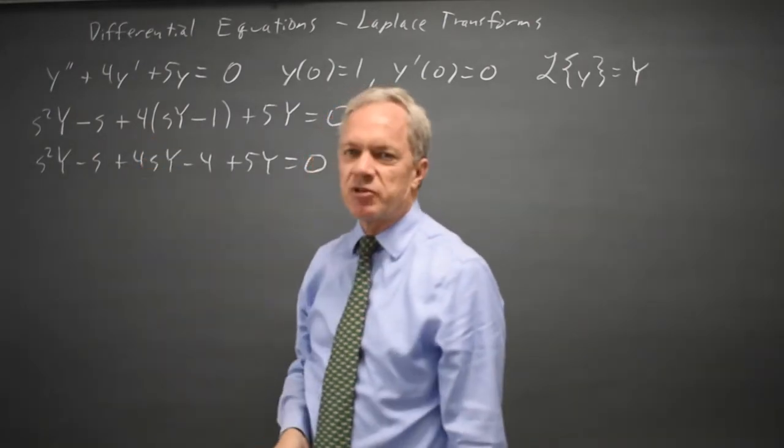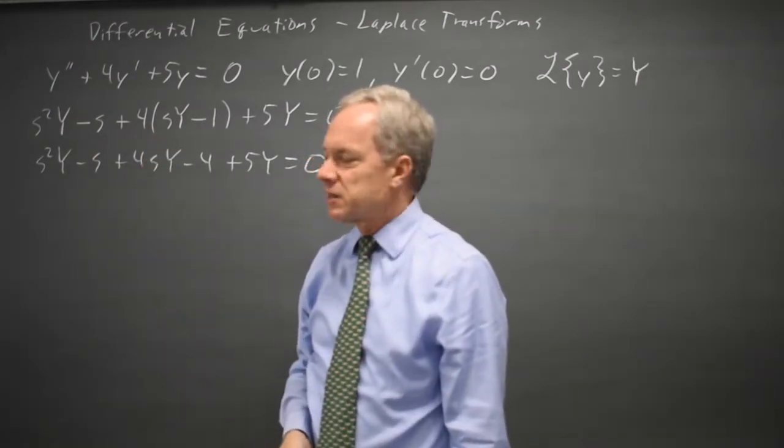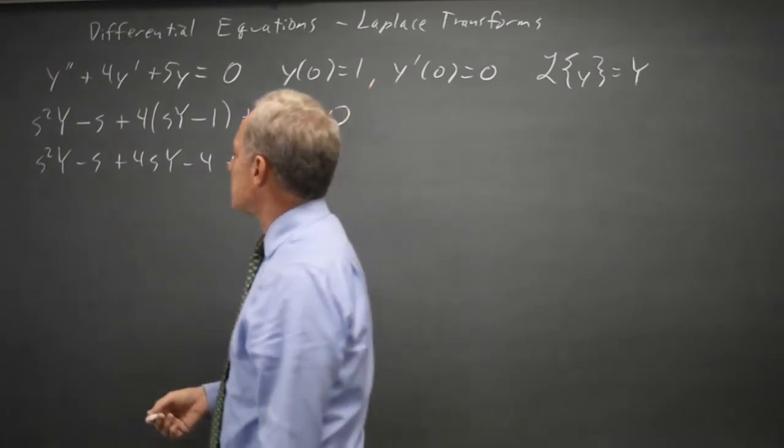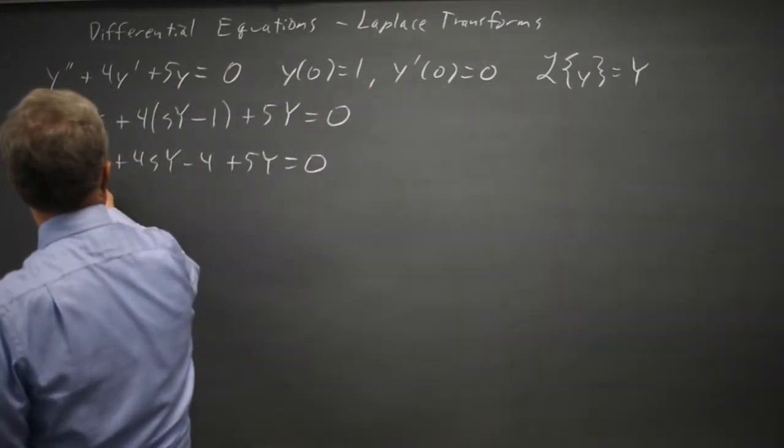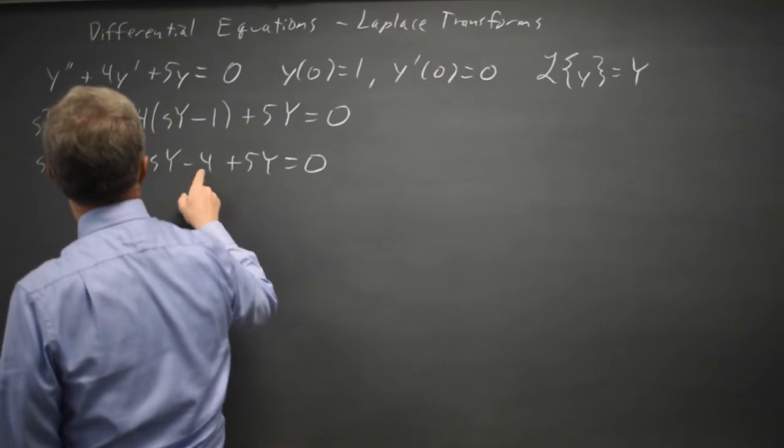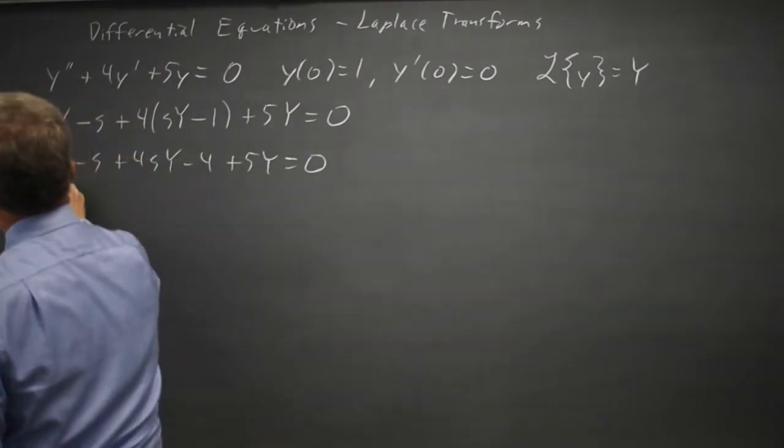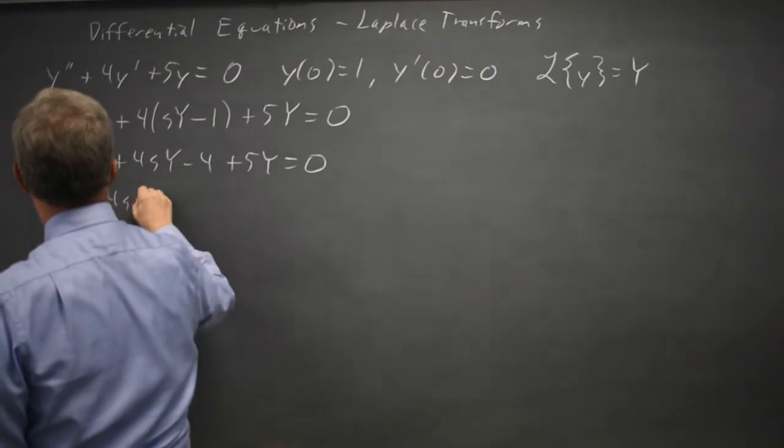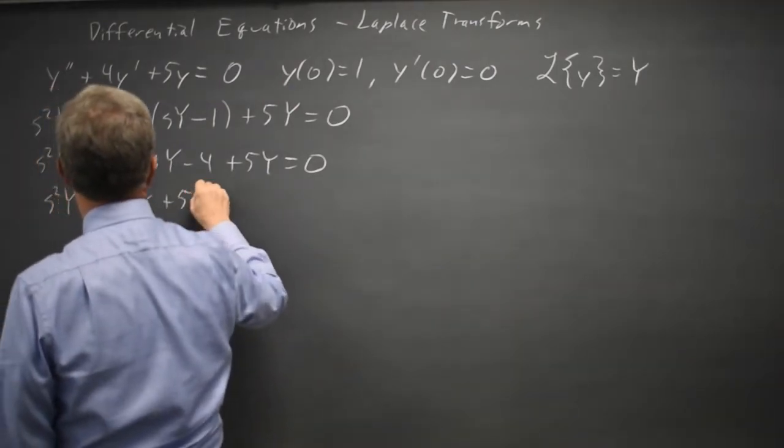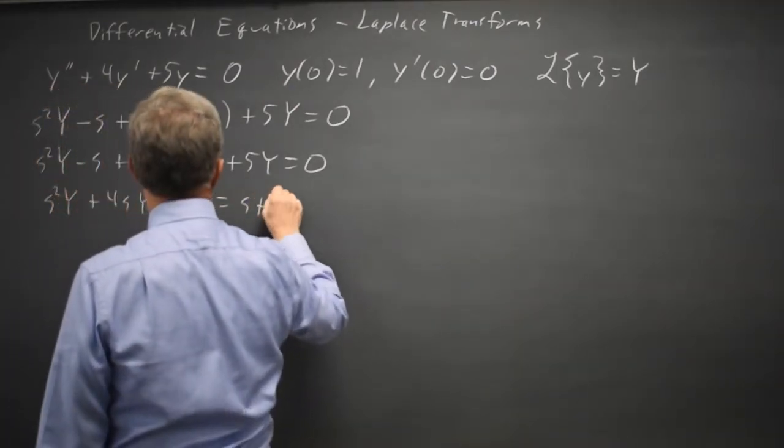So by doing separate steps I make fewer careless errors and that cuts my workload a lot. Moving the s and four to the right hand side, I have s squared Y plus four s Y plus five Y equals s plus four.